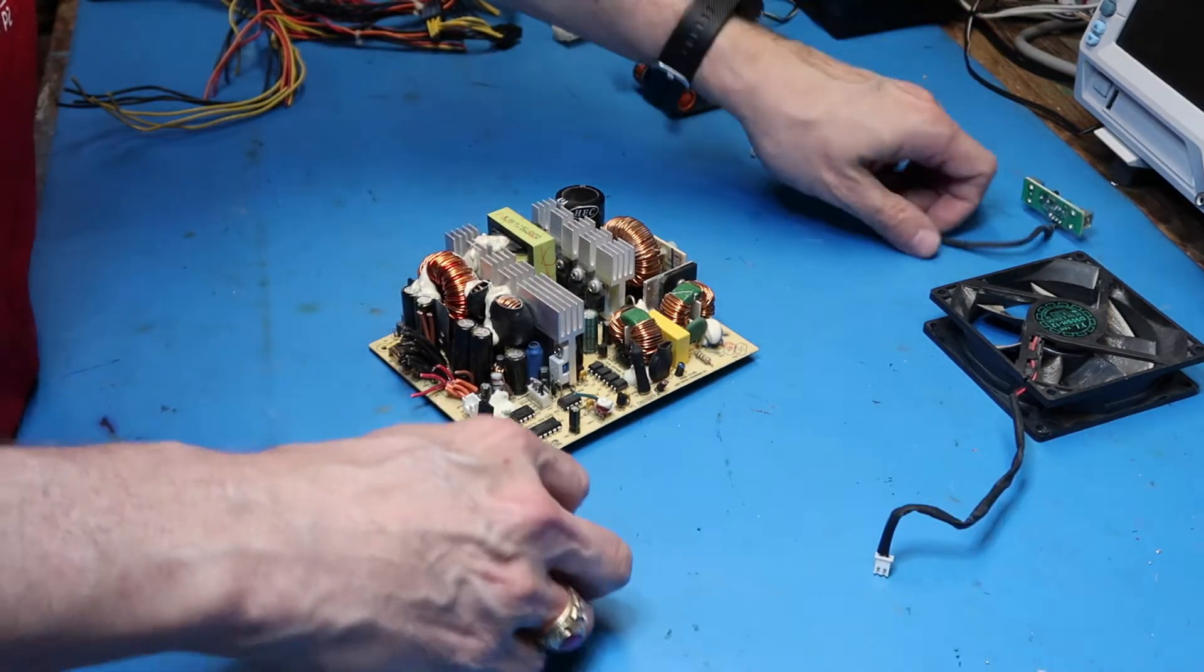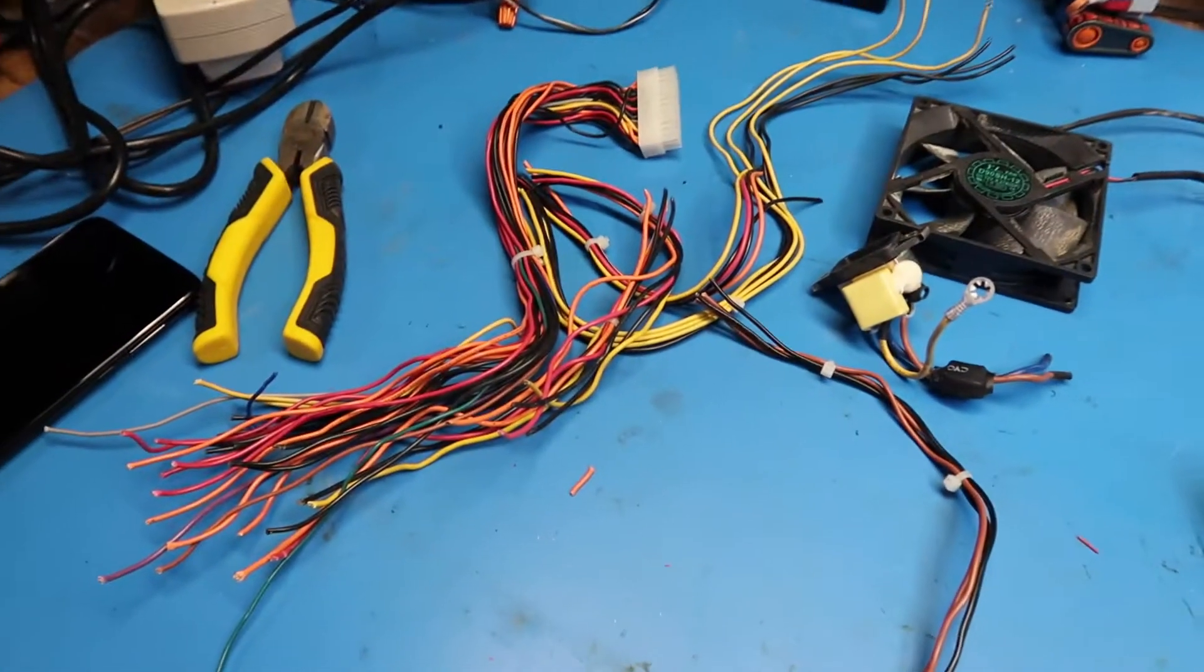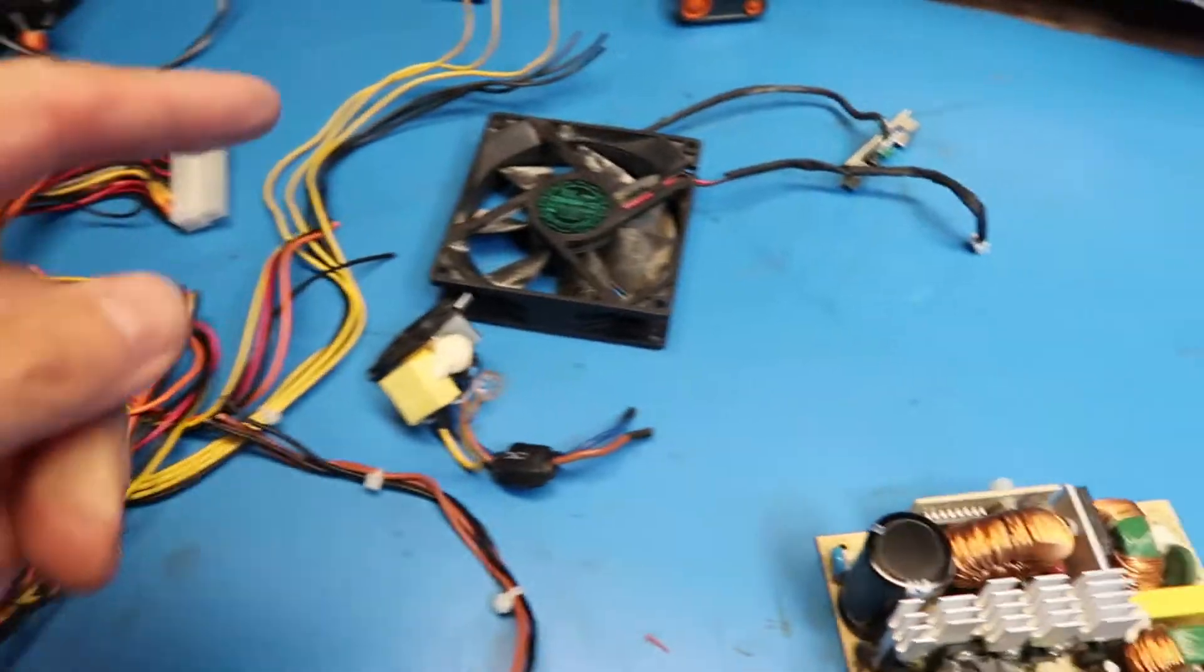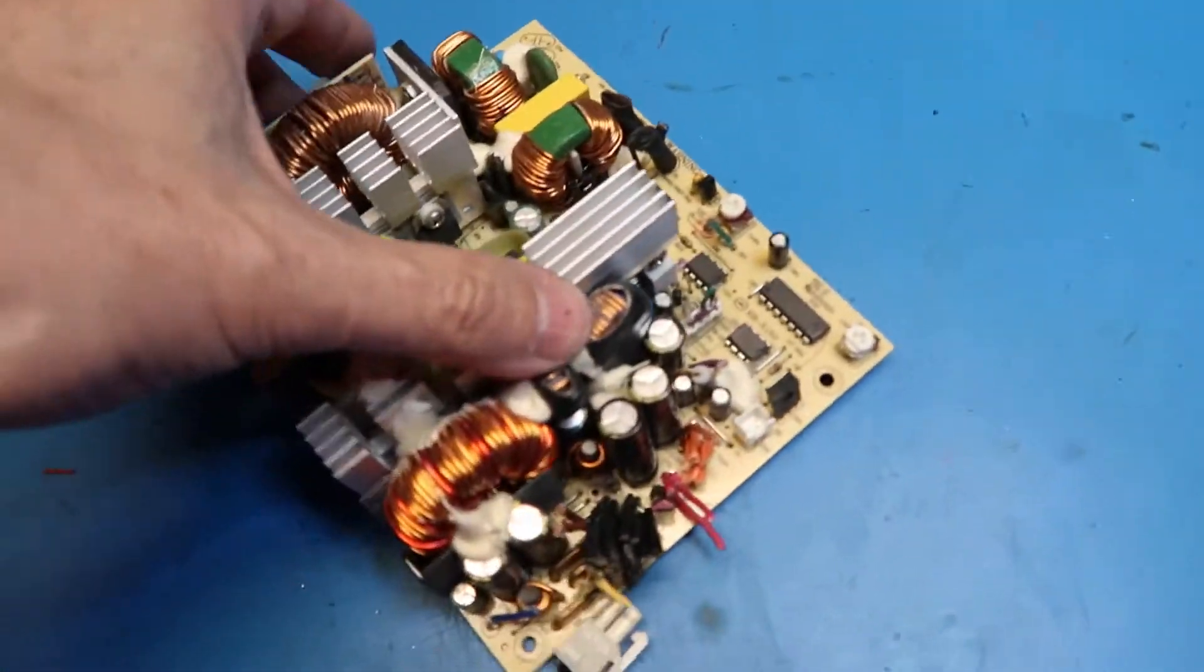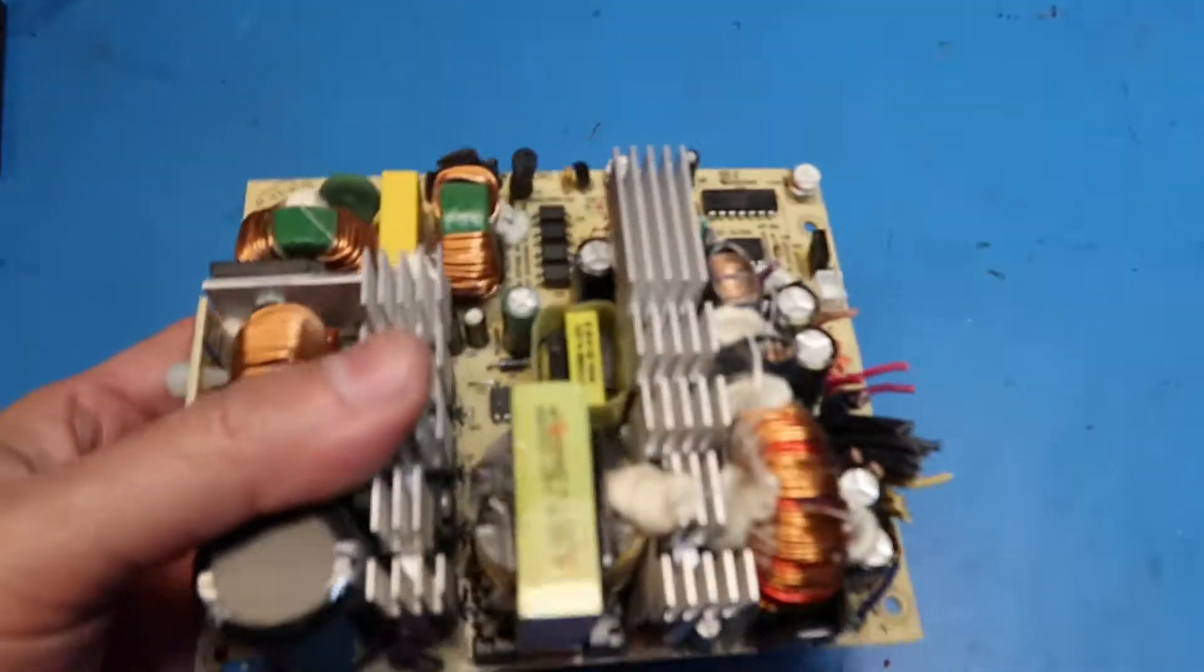So that takes care of our wire cutting. Put those aside. So here's our pile of wire. Our fan and our power connector. We're left with the main board that can be dealt with separately.